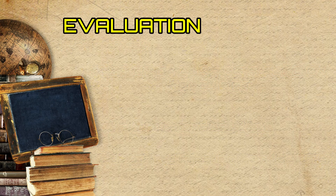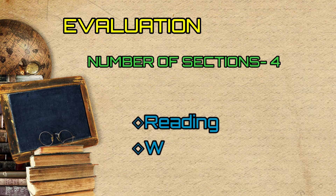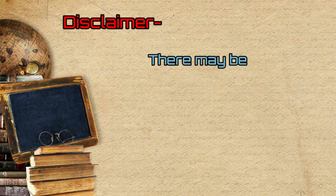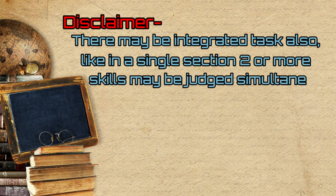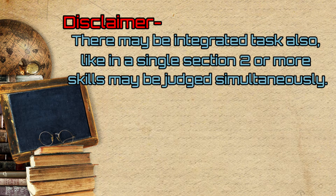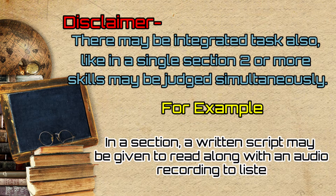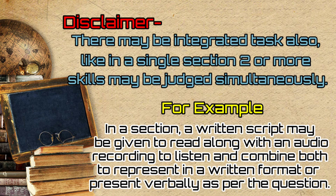The evaluation test is divided into four sections: Reading, Writing, Listening, and Speaking, as all of these are the most essential modes of communication. There may be integrated tasks also, where in a single section two or more skills may be judged simultaneously. For example, in a section a written script may be given to read along with an audio recording to listen, and combine both to represent in a written format or present verbally as per the question.